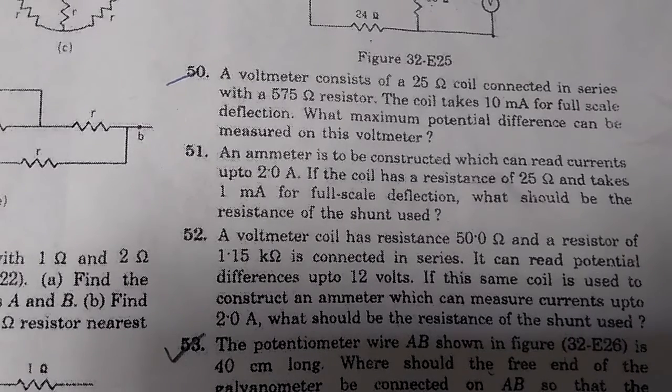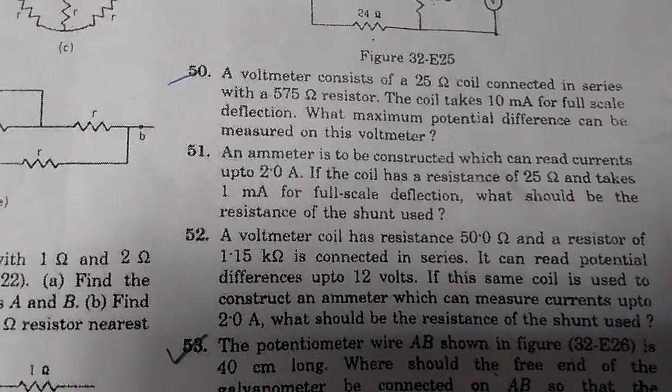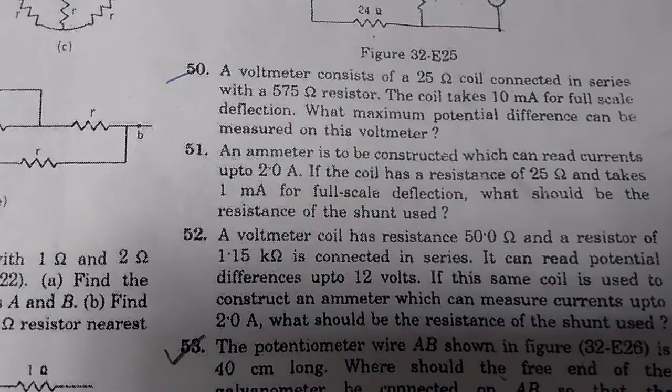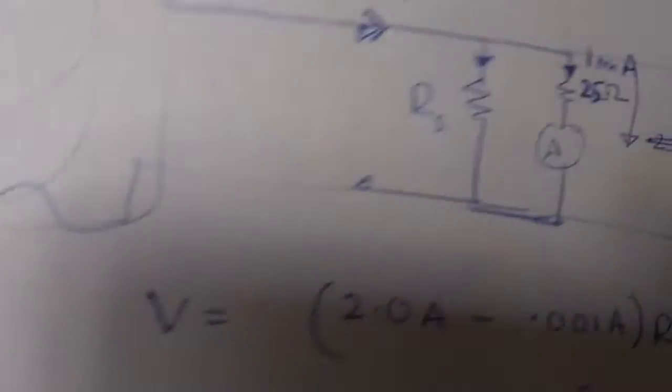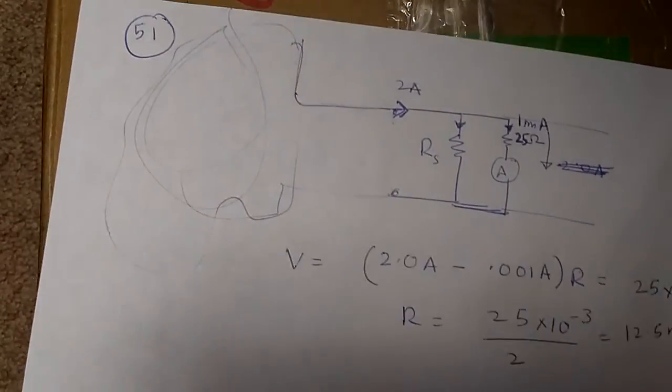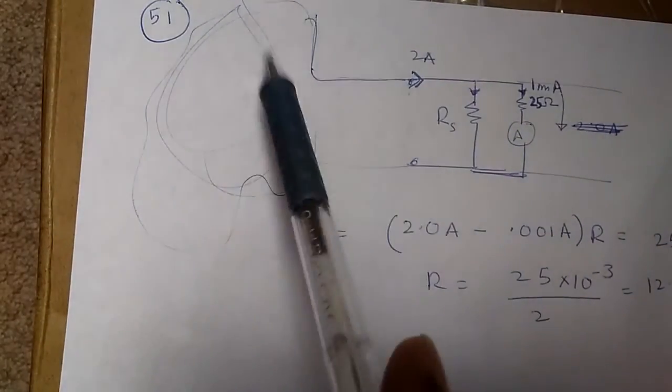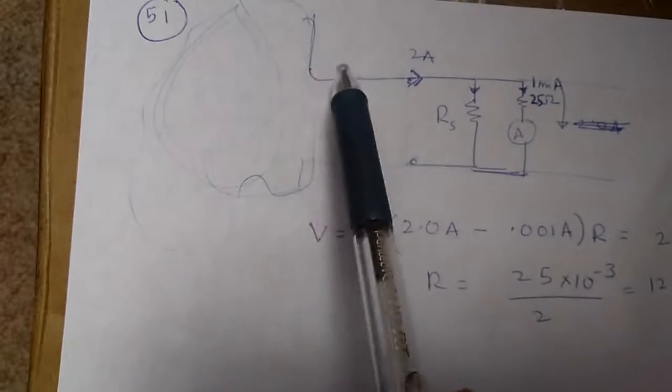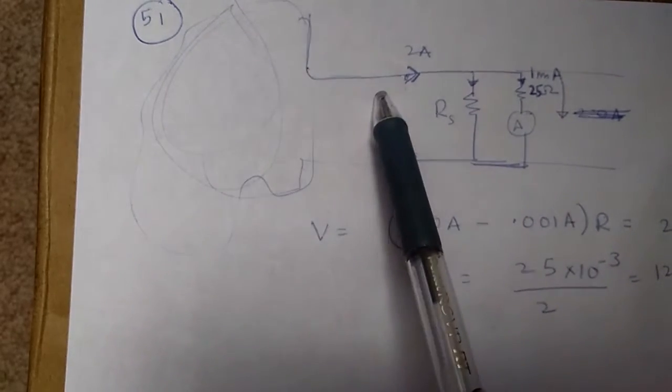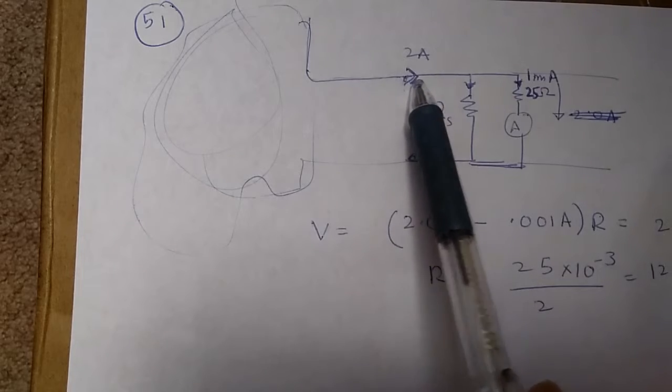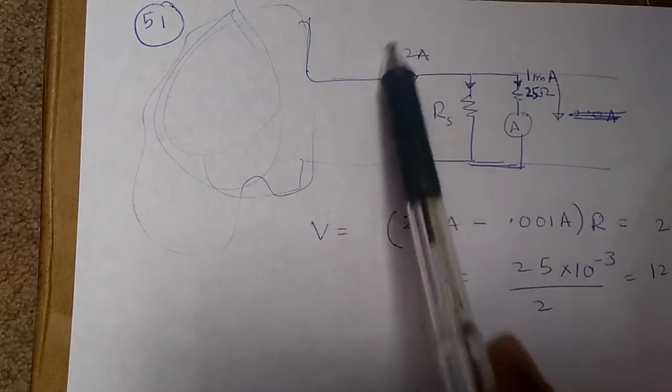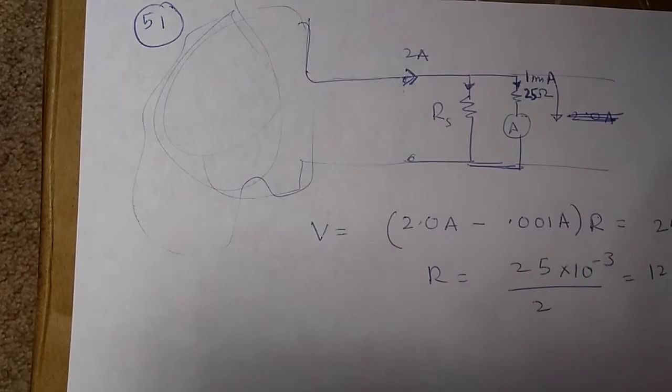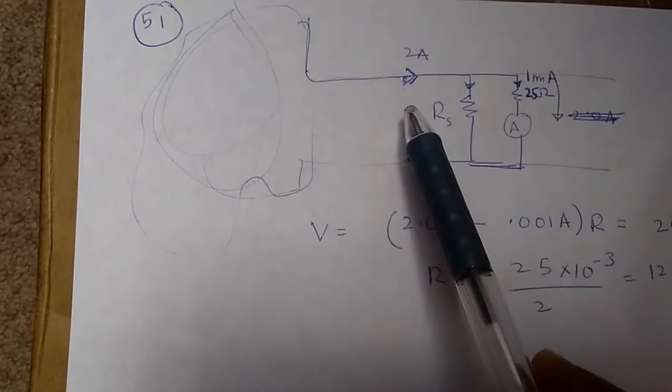Let's understand what's going on here. We have a circuit that can potentially take 2 ampere of current and we need to measure this 2 ampere of current. So, the way we do this is: